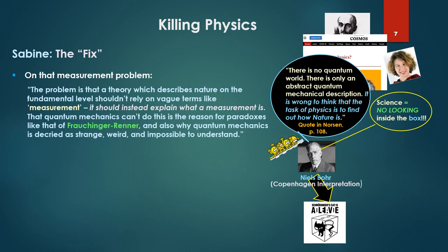Again, quoting, in hindsight, physicists should have focused on the problem in front of their eyes, the one they've seen in myriad experiments: the measurement problem of quantum mechanics. So on that measurement problem, she says, the problem is that a theory that describes nature on the fundamental level shouldn't rely on vague terms like measurement. It should instead explain what a measurement is.